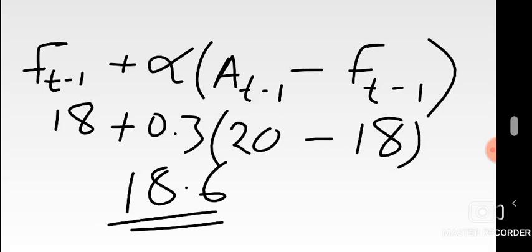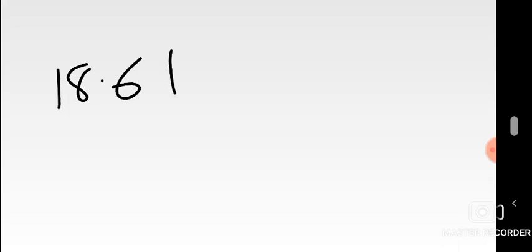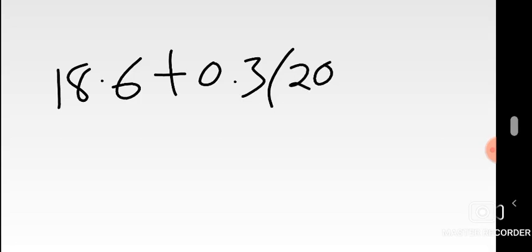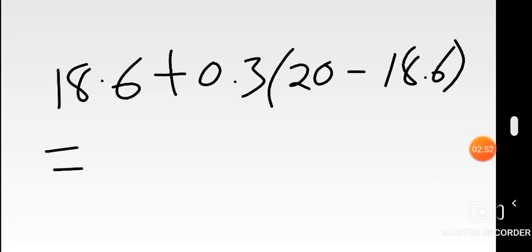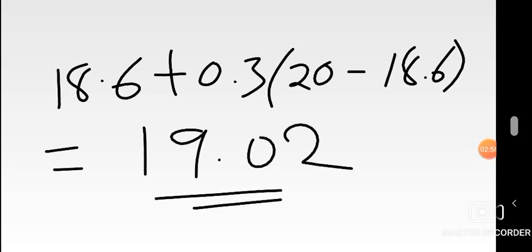Now that October's forecast is found, we can calculate November's forecast. Previous month's forecast is October's 18.6; actual sales in October is 20. Applying the formula: 18.6 + 0.3 × (20 - 18.6) = 18.6 + 0.3 × 1.4 = 18.6 + 0.42 = 19.02. The November forecast is 19.02.